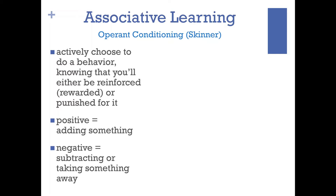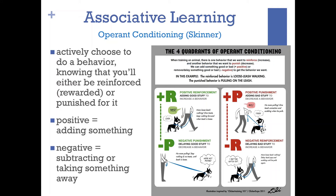In operant conditioning, 'positive' means adding something as a way to either reinforce or punish, and 'negative' means subtracting something as a way to reinforce or punish. Looking at the four quadrants: there is one behavior we want to reinforce or increase and another we want to punish or decrease. We can add something good or bad (positive) or remove something good or bad (negative). Positive reinforcement is adding good stuff to increase behavior; negative punishment is delaying good stuff to decrease behavior; positive punishment is adding bad stuff to decrease behavior; and negative reinforcement is eliminating bad stuff to increase behavior.